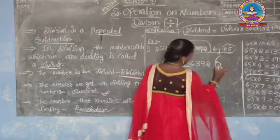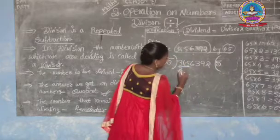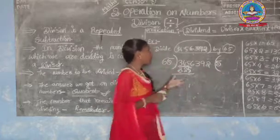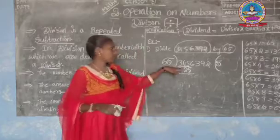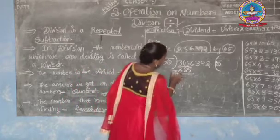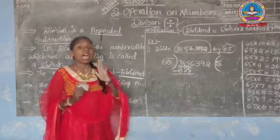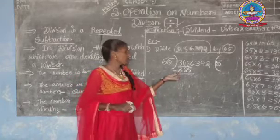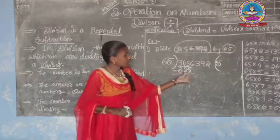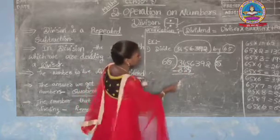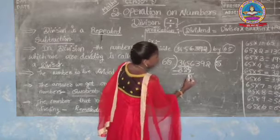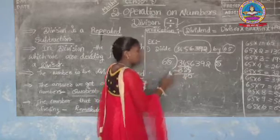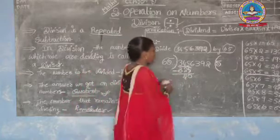Write the product 325 below 345 and subtract. 5 minus 5 is 0, 4 minus 2 is 2, 3 minus 3 is 0. The result is 20. Since 20 is smaller than 65, we bring down the next digit, 6, to get 206.